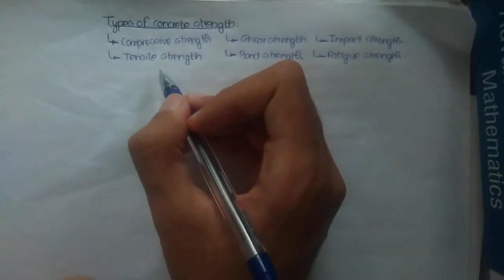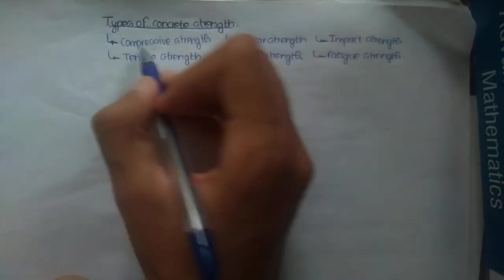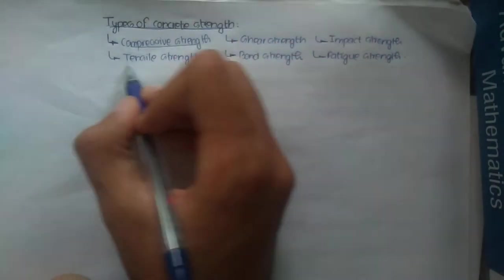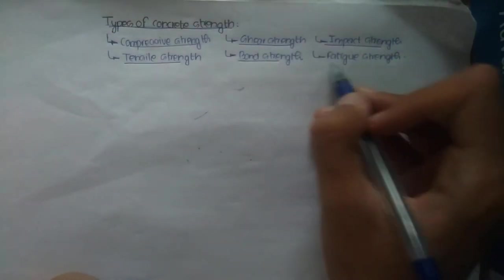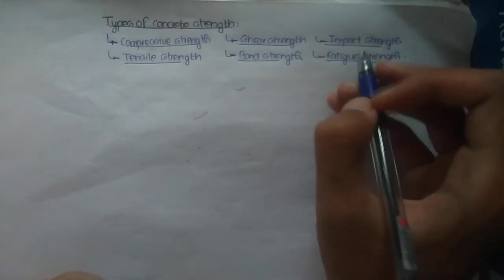The various types of concrete strength are: compressive strength, tensile strength, shear strength, bond strength, impact strength, and fatigue strength.